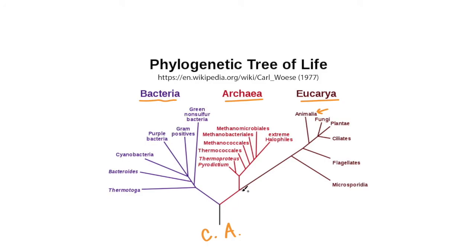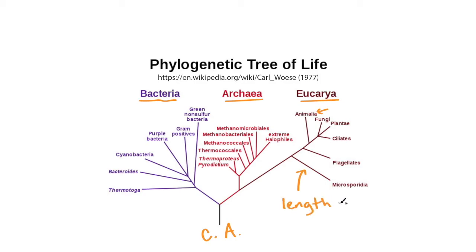The length of each one of these branches represents the genetic difference between the different types of organisms, and that genetic difference has to be measured in a specific way. So we can say that the length is proportional to the genetic difference.